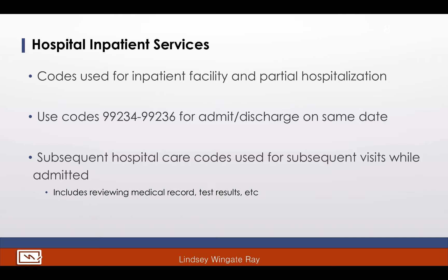For hospital inpatient services, this set of codes is used for the inpatient facility and also for reporting a partial hospitalization program. This category is divided into subcategories for initial hospital care and subsequent hospital care. Initial hospital care is for the first hospital inpatient encounter by the admitting physician. If there are other initial inpatient encounters by non-admitting physicians, look at the initial inpatient consultation codes or subsequent hospital care. You cannot report two initial hospital care visits on the same day from the same episode — this is a CPT guideline.